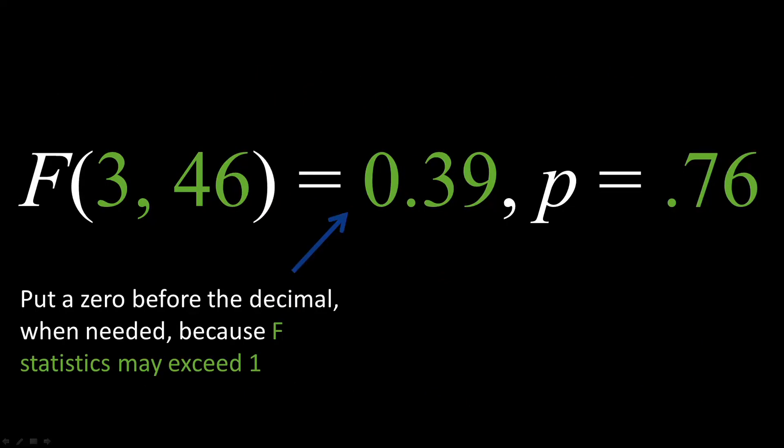Put a zero before the decimal in the F statistic, when needed, because it is possible for the result to exceed 1. But do not put a zero before the p-value, because it never exceeds 1.